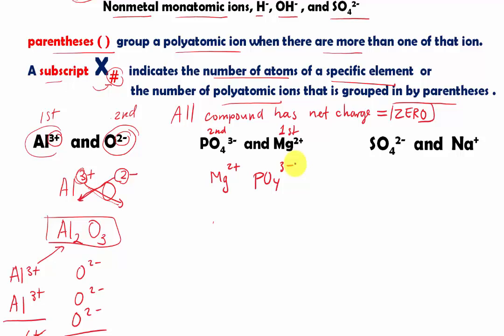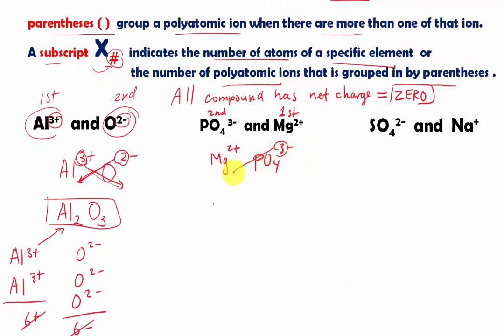We're going to criss cross the number of the charges. In this case, that 3 is going to bring it down. It's going to represent the number of magnesium. So I'm going to have Mg 3. Then that 2 right there. Again, I do not bring down the negative. I only bring down the number of the charge. And that 2 is going to bring down over here.